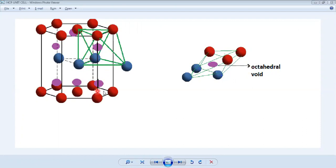These three atoms and these three atoms again form an octahedral void somewhere within the HCP unit cell. The similar arrangement can be observed at six places within an HCP unit cell.